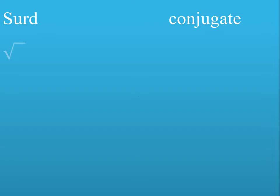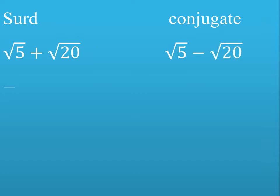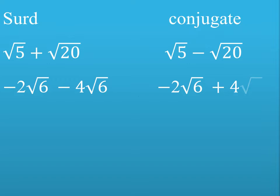Let's look at the conjugate of the following surds. The conjugate of √5 + √20 is √5 − √20. For the surd −2√6 − 4√6, its conjugate is −2√6 + 4√6. The conjugate of 3√5 is 3√5.